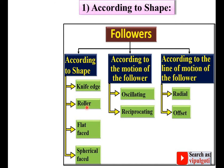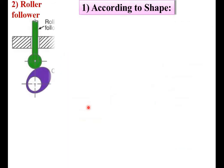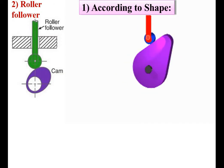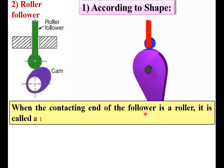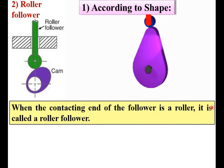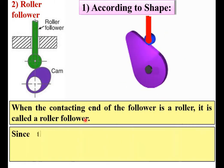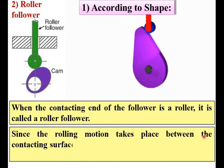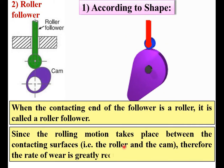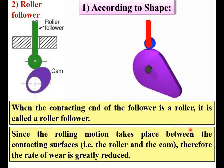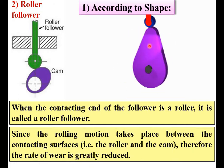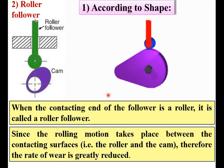Next, the roller Follower. Here you can see a roller at the end of the Follower. When the contacting end of the Follower is a roller, it is called a roller Follower. Since rolling motion takes place between the contacting surface — that means between the roller and the CAM — the rate of wear is greatly reduced compared to the knife edge Follower.